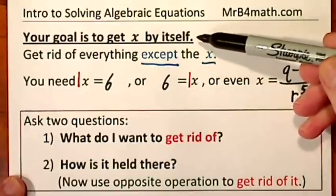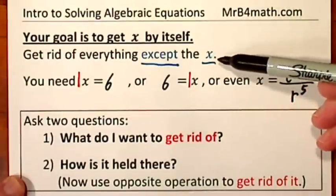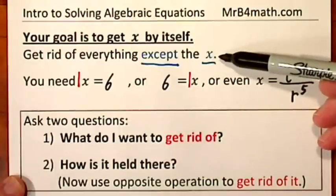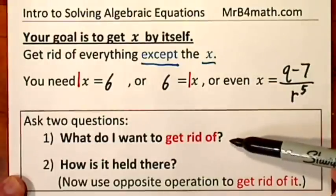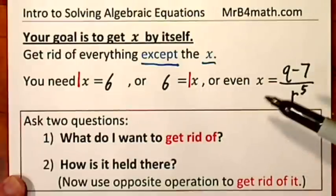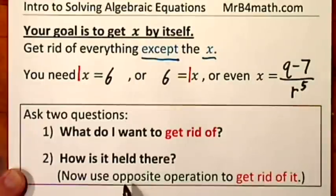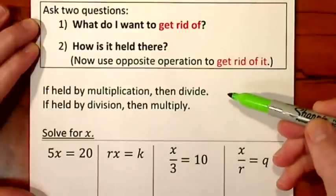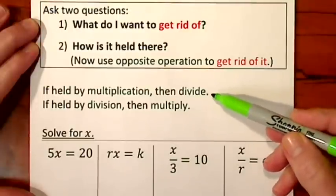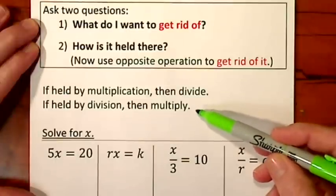So in your effort to get x by itself — that is, get rid of everything except the x — you're basically going to focus on two questions. First you decide what you want to get rid of, and then you focus on how it's held there. Because by using the opposite operation, you can get rid of it. For instance, if it's held by multiplication, then you divide. If it's held by division, then you multiply.